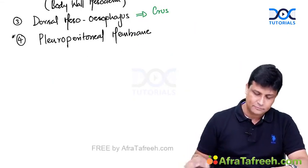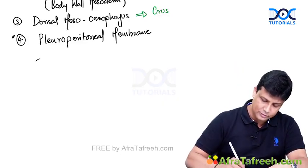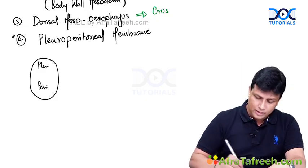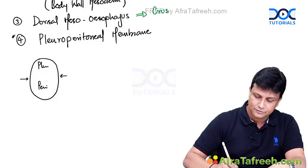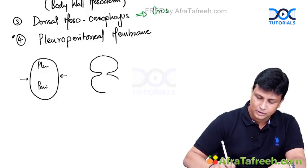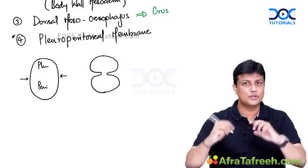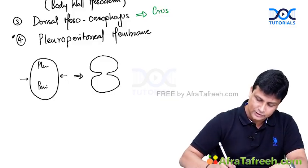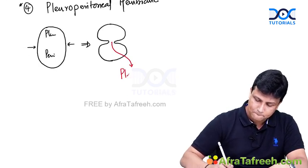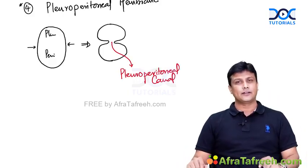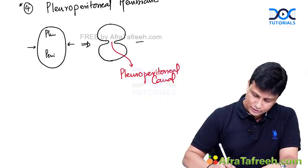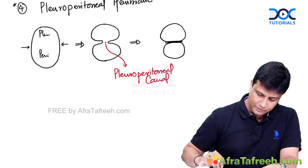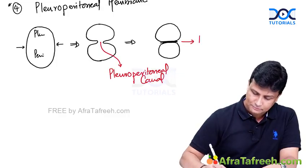Let us discuss in a little detail about the pleuroperitoneal membrane, as many questions come from here. Imagine the trunk: above you have the pleural cavity and below the peritoneal cavity. There will be an invagination formed, and because of this, only a canal remains between the pleural and peritoneal cavities — that canal is referred to as the pleuroperitoneal canal. Finally, this is going to fuse together, and once fused, it leads to the formation of that membrane in the middle — the pleuroperitoneal membrane.